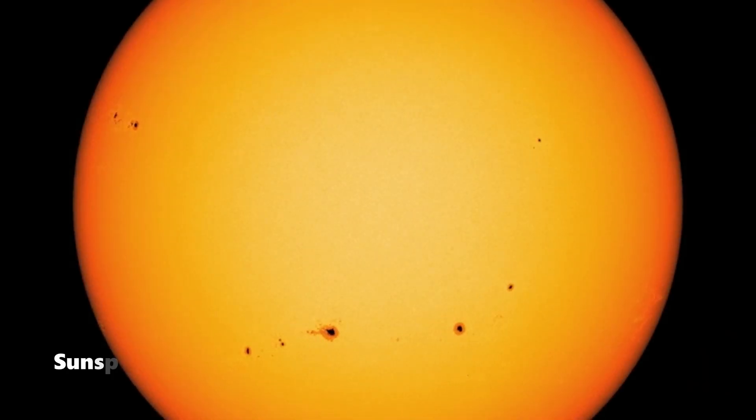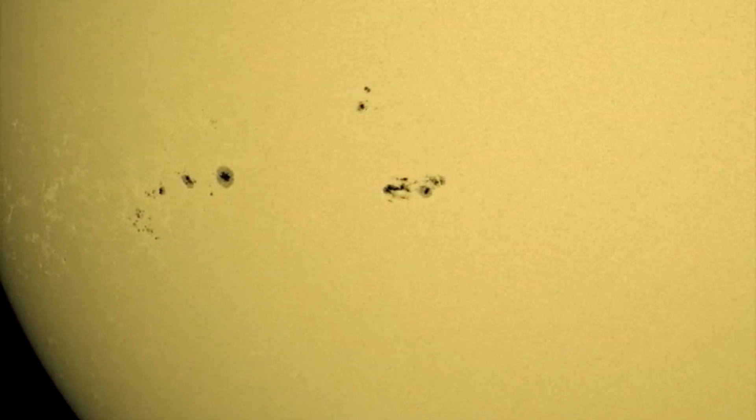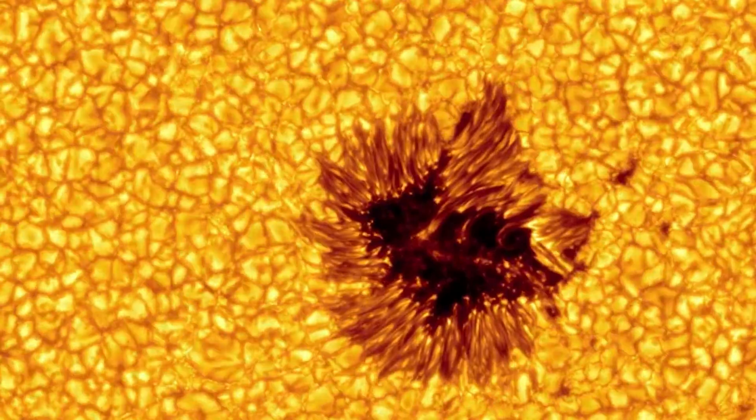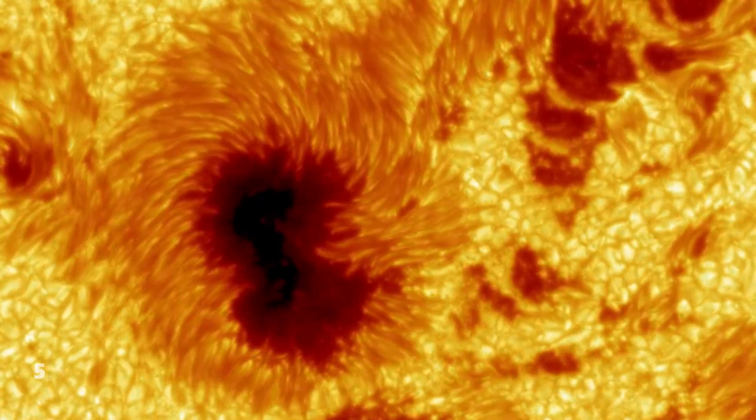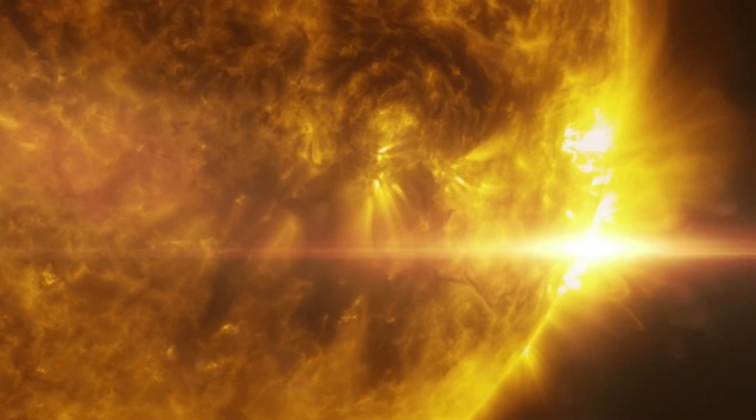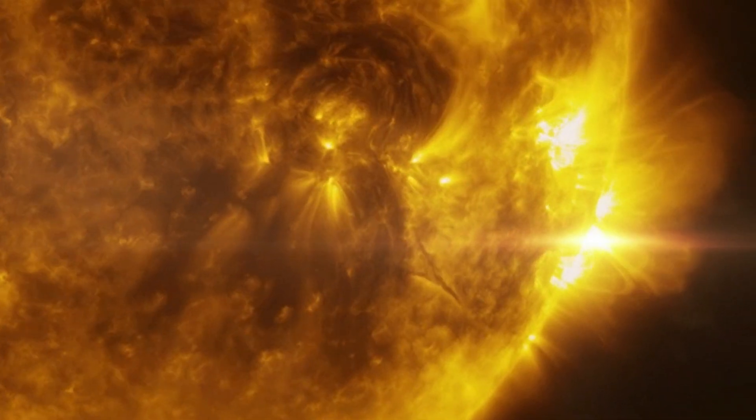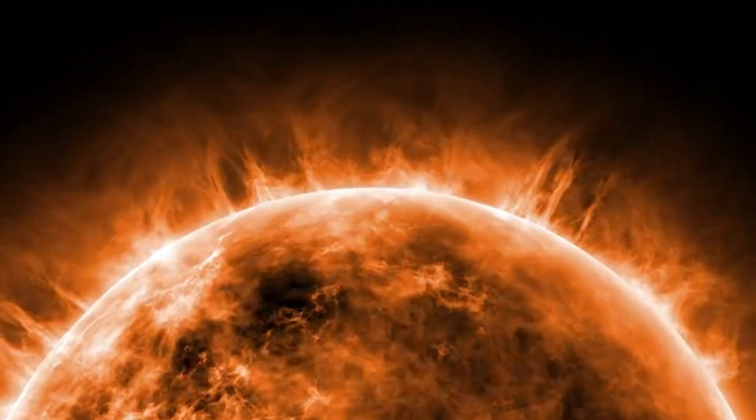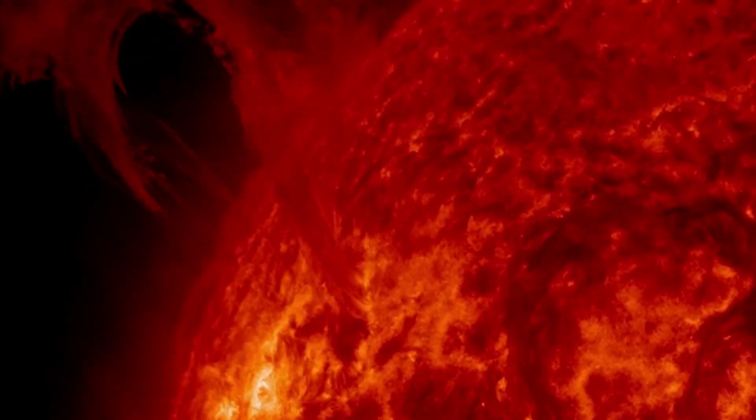Sunspots are areas on the sun's surface, called the photosphere, where the temperature is significantly lower than the surrounding regions. While the average temperature of the sun's surface is about 5,500 degrees Celsius, sunspots can be as cool as 3,800 degrees Celsius. This cooler temperature makes them appear darker, although they still emit light.